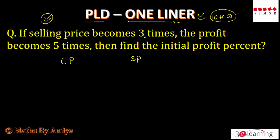If selling price becomes 3 times, profit becomes 5 times — we have to find the profit percent. For the one liner, always assume cost price is 100 and profit is P. So selling price is 100 plus P.